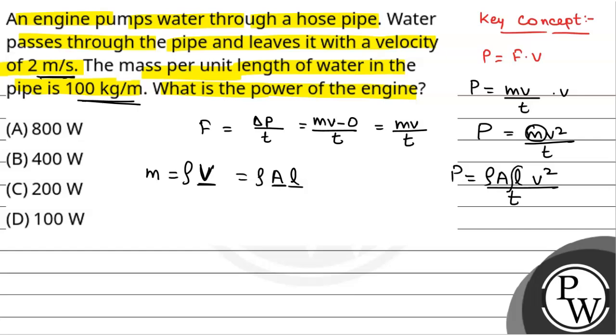Now, we have L by t that is equal to v. So, power will be equal to rho A v cubed. This will be the power.